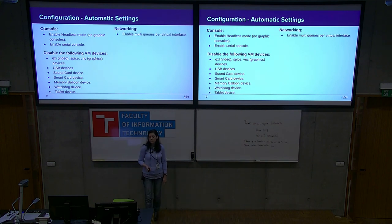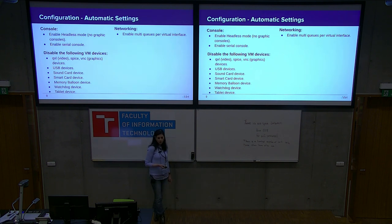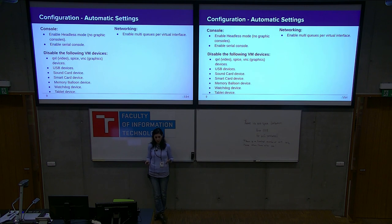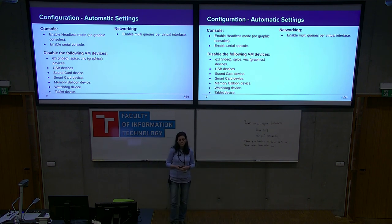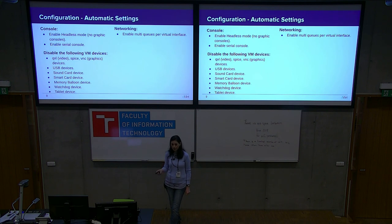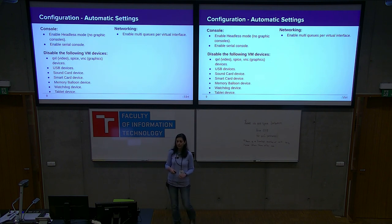For networking, we enable multi-queues per virtual interface. That means that per each virtual networking interface, you will have more than one queue, so networking requests are handled in parallel and performance is increased. On the other hand, remember that per each queue you will need a thread to handle it, which means fewer threads available for CPU processing. So if your VM has heavy networking operations, leave it enabled; but if the load is mostly CPU processing with less networking activity, you might want to disable it.